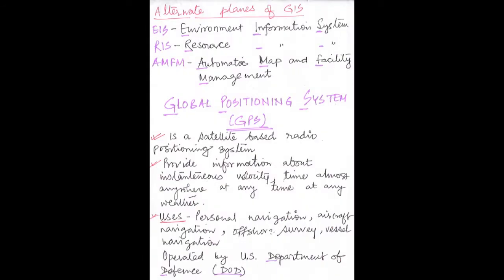Now, what are the alternate planes of GIS? Alternate planes of GIS are EIS, RIS, AMFM, etc. You should know the full forms of all these because questions can be framed from here. EIS means Environment Information System. RIS stands for Resource Information System. AMFM means Automatic Map and Facility Management.